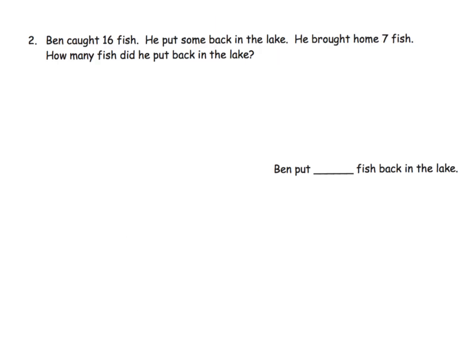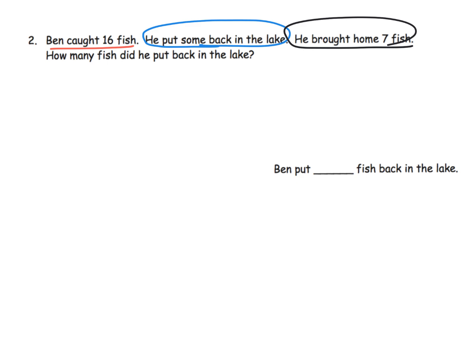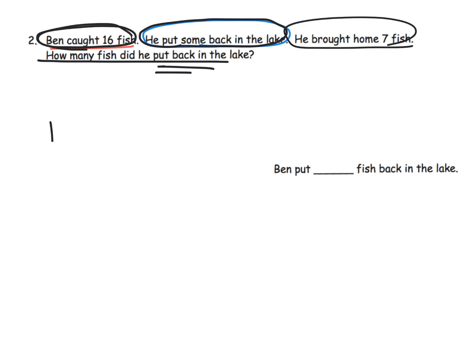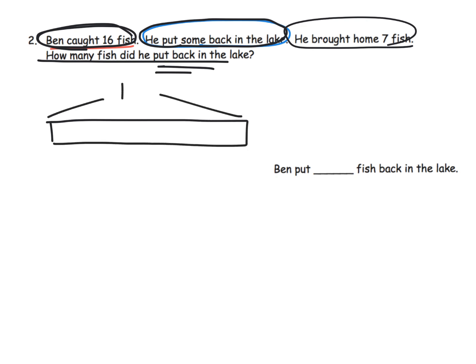I'm just going to model — I'll leave the solution to you as the parents and teachers. Ben caught 16 fish. He put some back in the lake and brought seven home. The question is: how many fish did he put back in the lake? Let's start with the whole — he caught 16 fish, so that's my total. He put some back in the lake and we don't know how many, so I'm going to cut right here, put a question mark, and label it 'lake.'